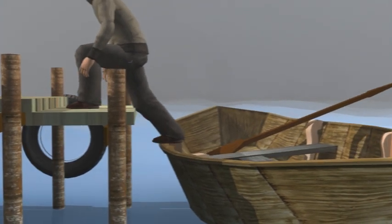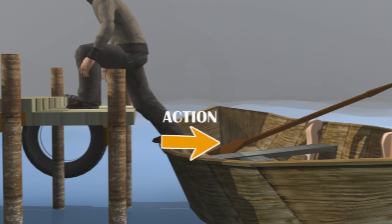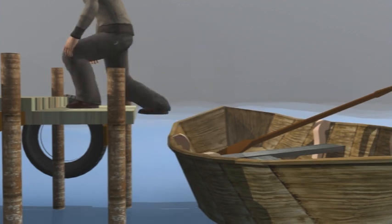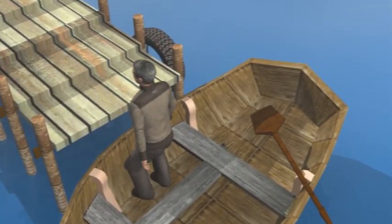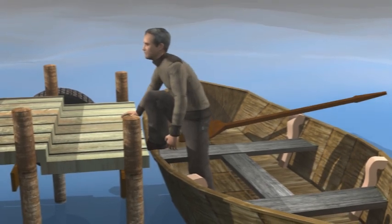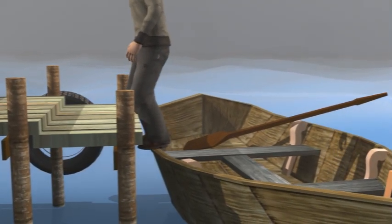To step out of a boat, the man presses the boat with his foot in the backward direction which is action. The boat exerts an equal force on the man in the forward direction which is reaction and it helps the man to move forward.